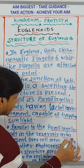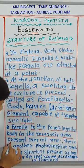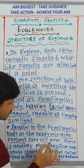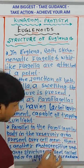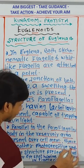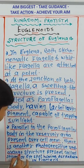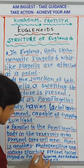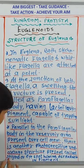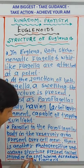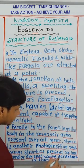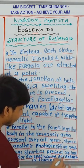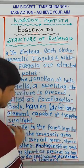Parallel to the para-flagellar body, in the reservoir area present over the cell membrane, there is another photosensitive red-orange structure called stigma or eye spot, having astagentine pigment.